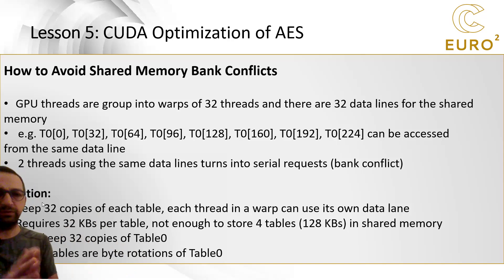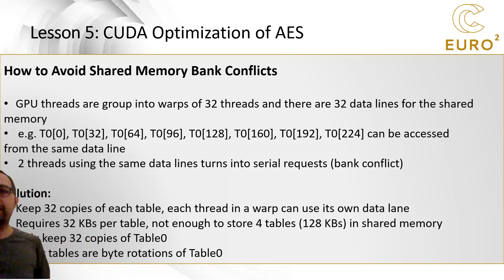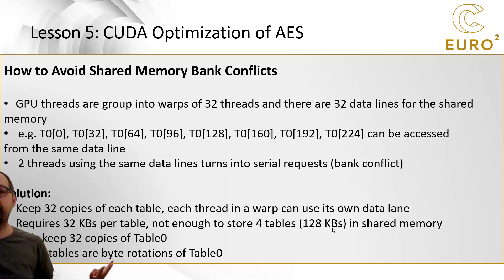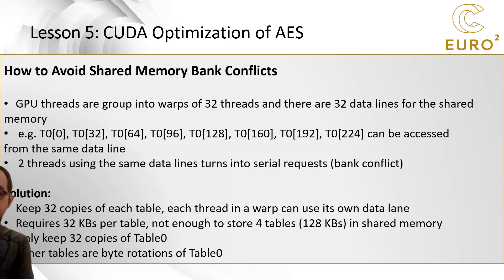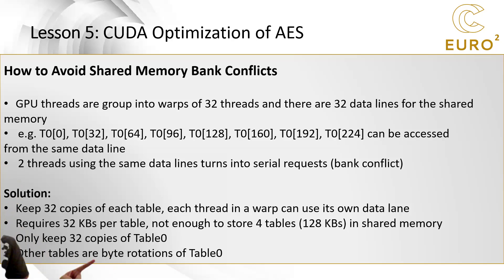My solution is to keep 32 copies of each table so each thread has its own data lane, eliminating bank conflicts. However, 32 copies of a single table require 32 kilobytes, and with four tables that is 128 kilobytes — more than current GPUs provide in shared memory. If future CUDA devices offer that much shared memory, this full approach would be even faster.